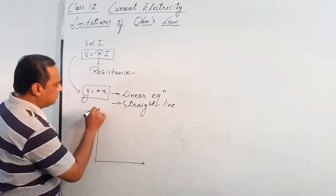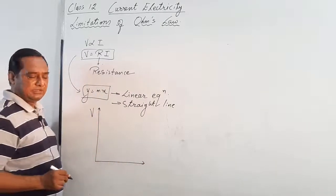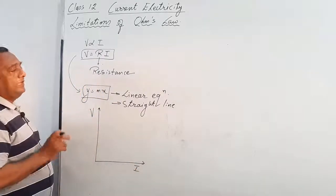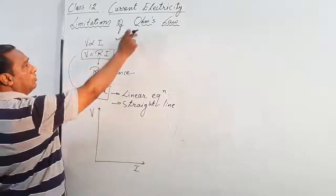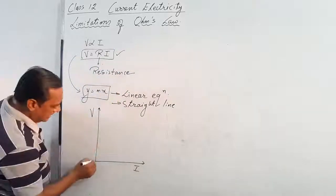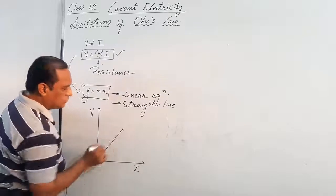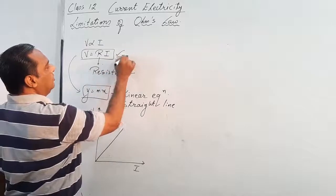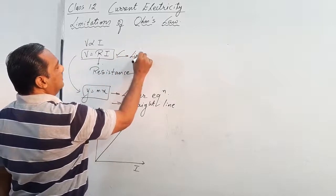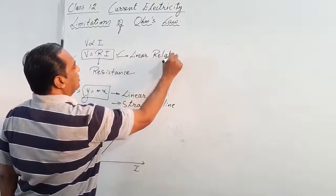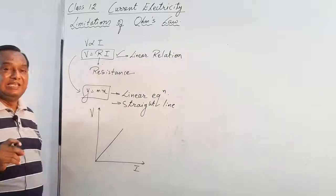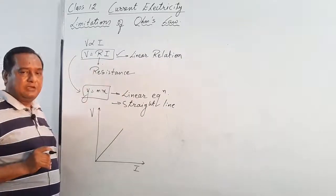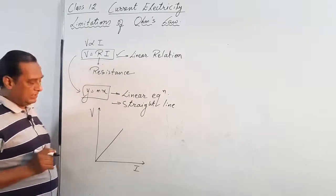If the Y axis represents potential difference V and the X axis represents current I, then the conductor obeying Ohm's law is going to give a straight line graph passing through the origin. This relation is called a linear relation, so Ohm's law is a linear relation.